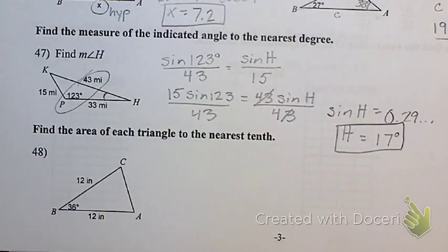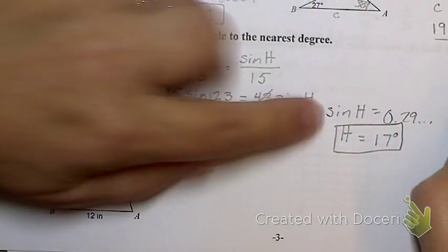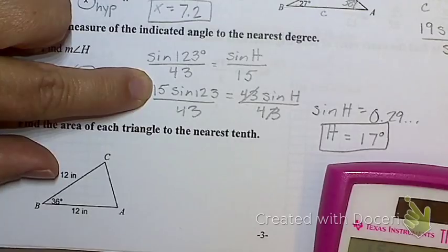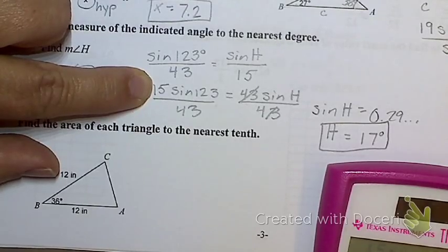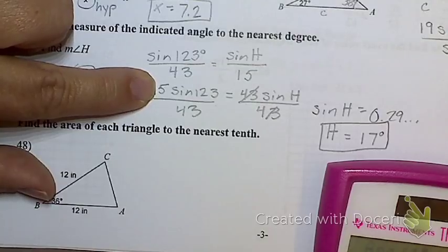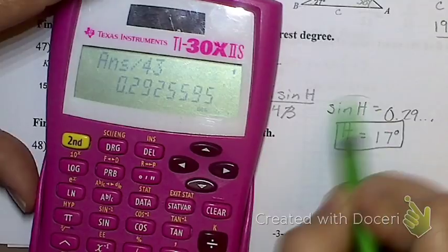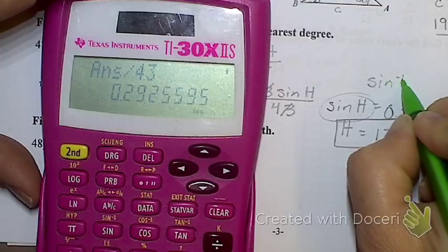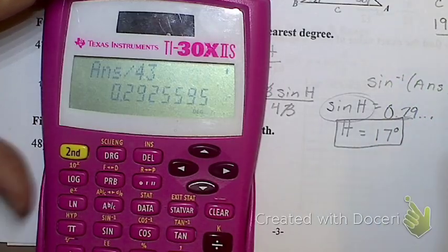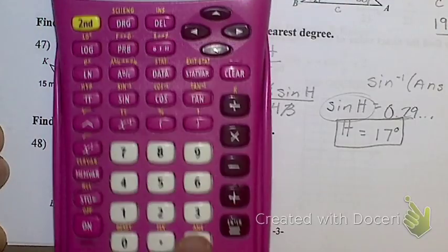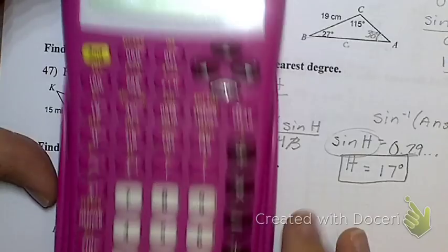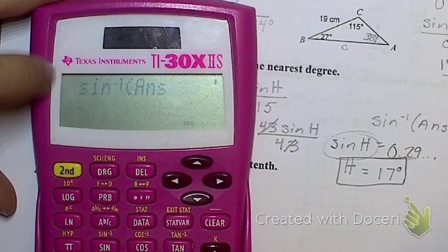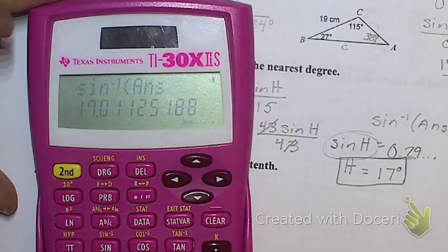Can you repeat that calculator step? I did 15 sine 123 divided by 43 and got this decimal. If I need the inverse sine of that, I'm going to plug inverse sine of the previous answer: second sine, then the previous answer button — which on this calculator is above the negative sign, so second answer. That takes the inverse sine of the whole decimal without rounding it off, which keeps its accuracy. And I get 17 degrees.